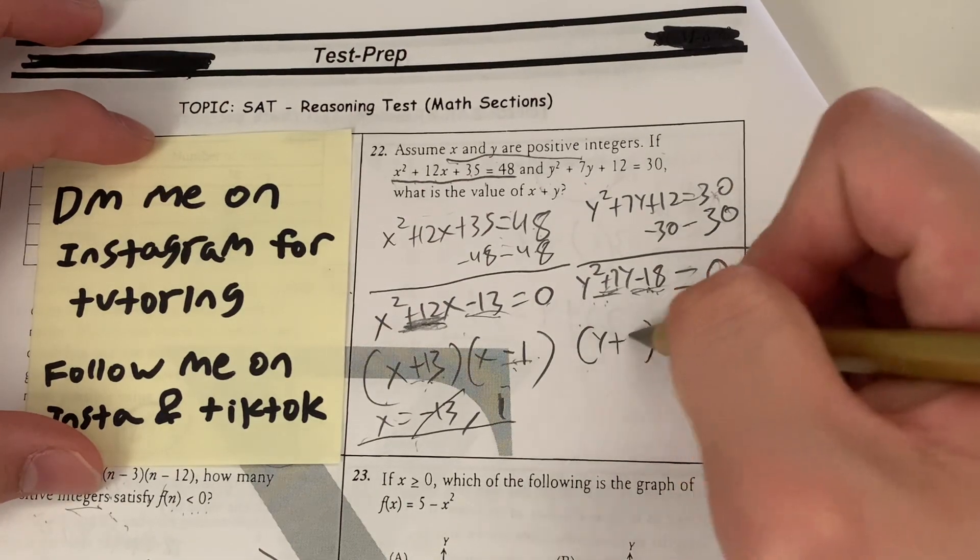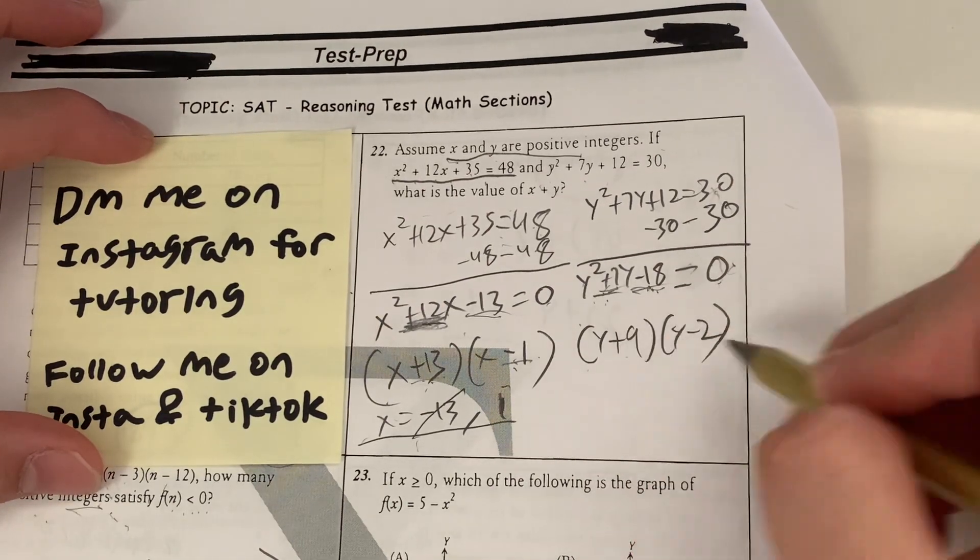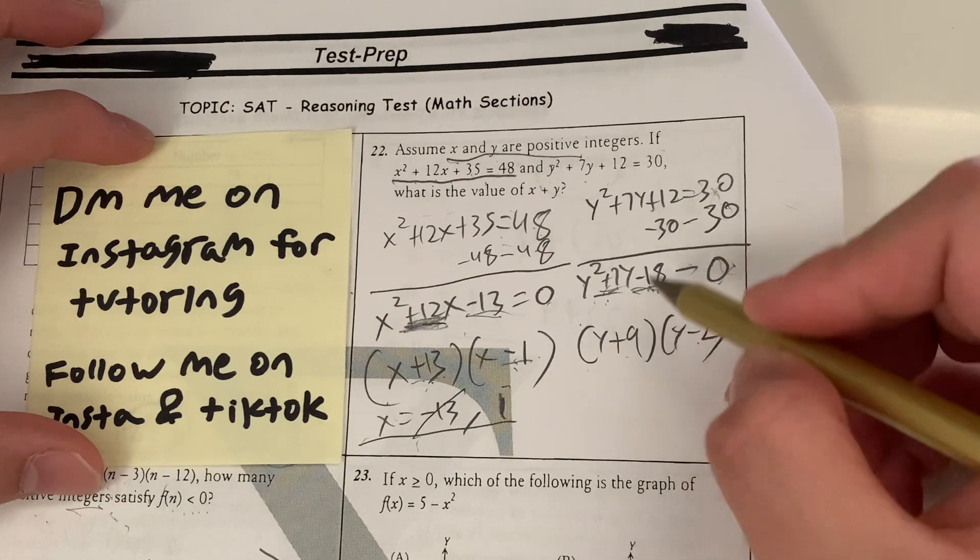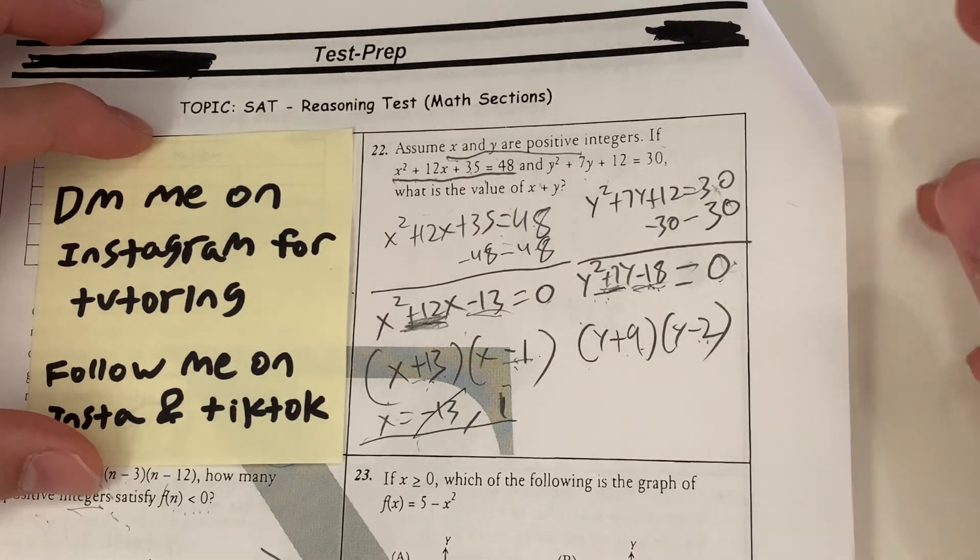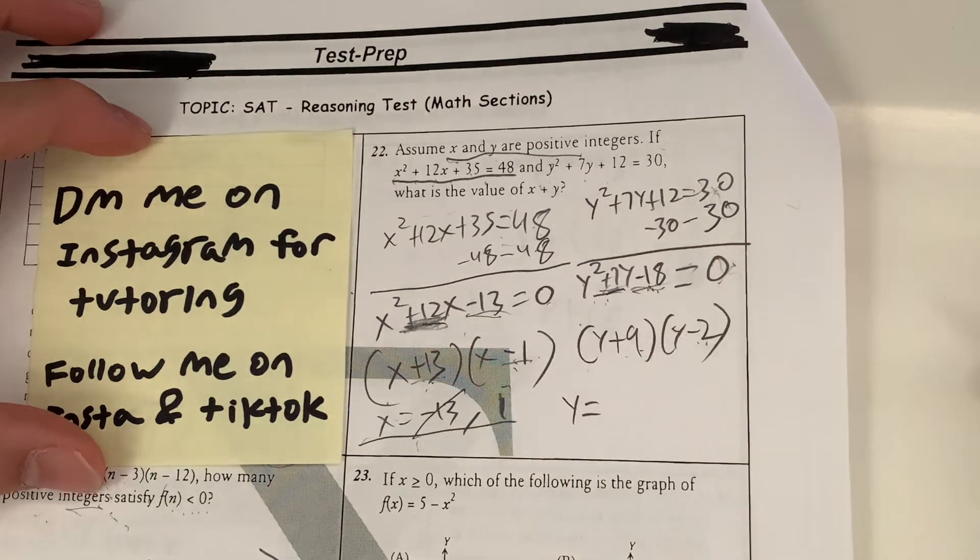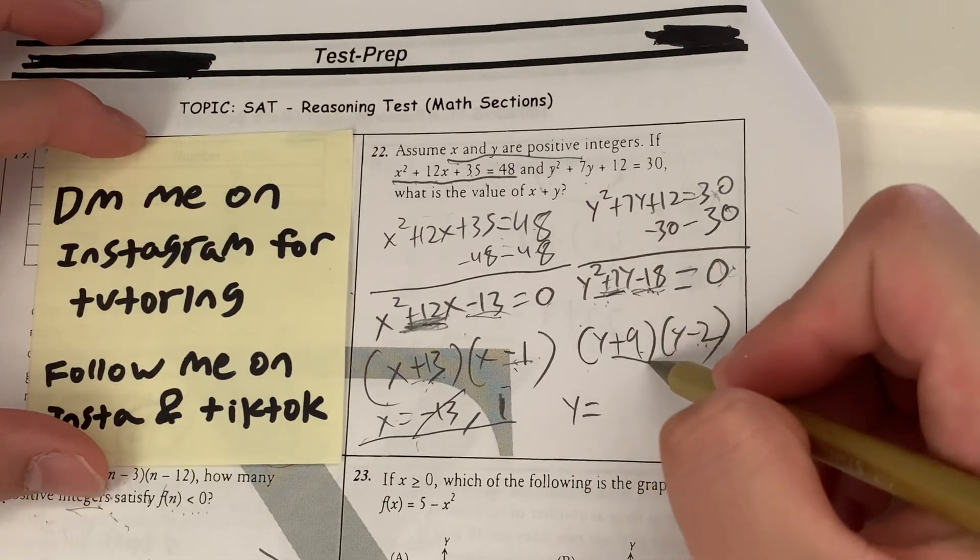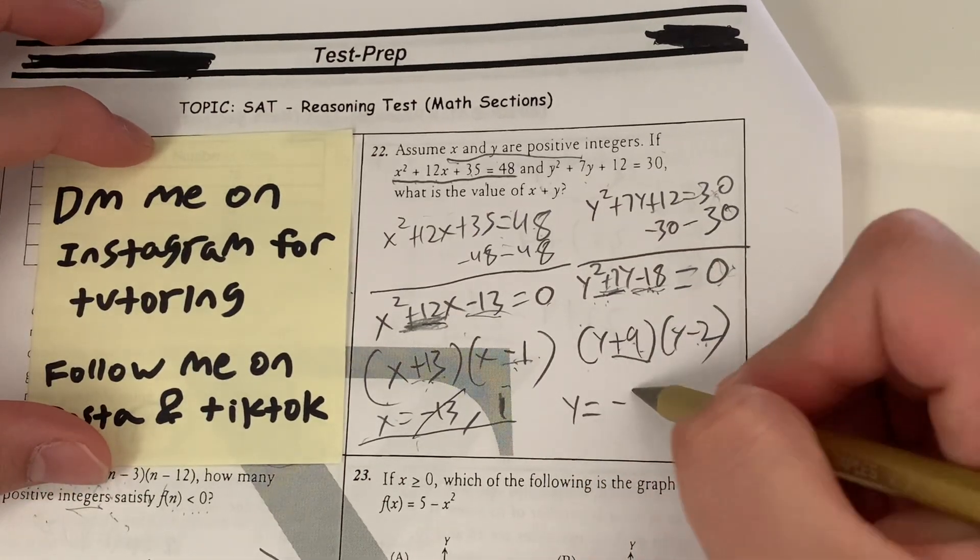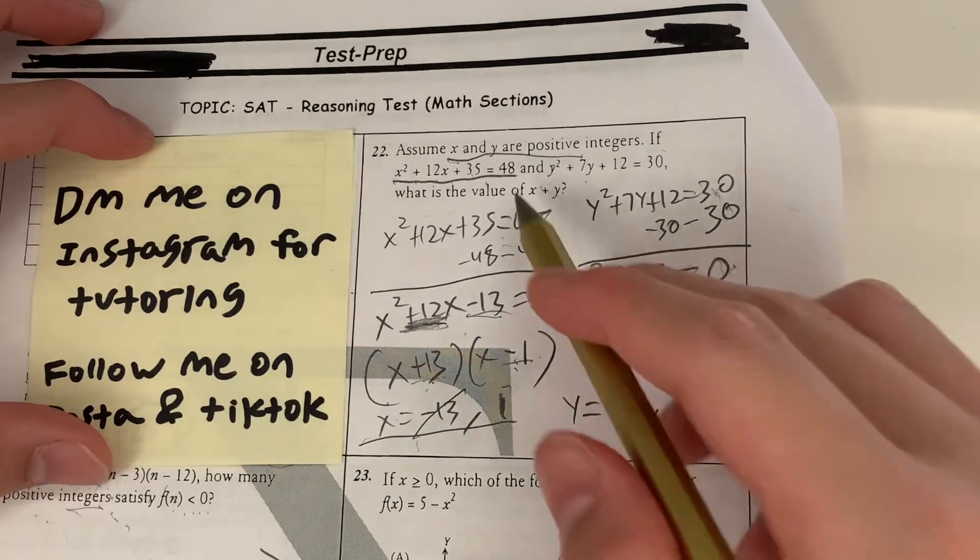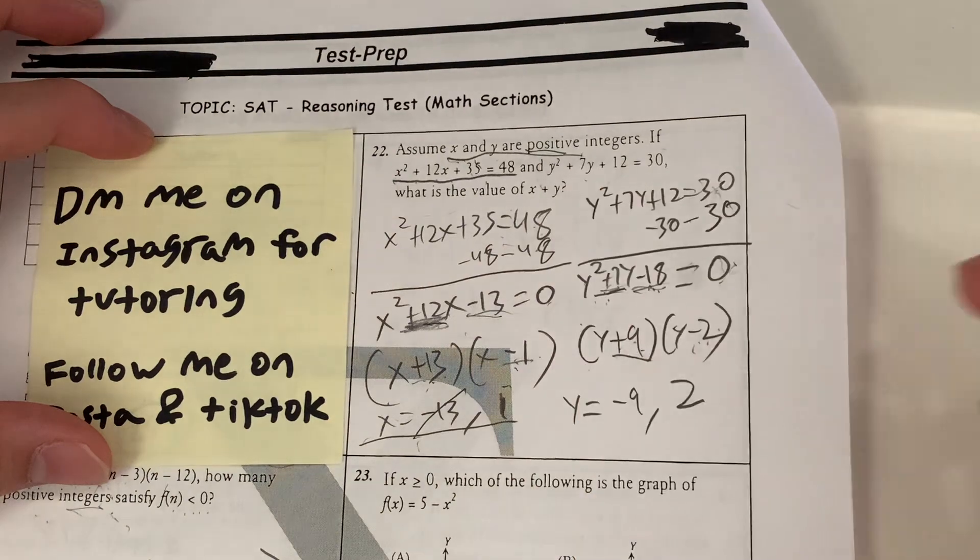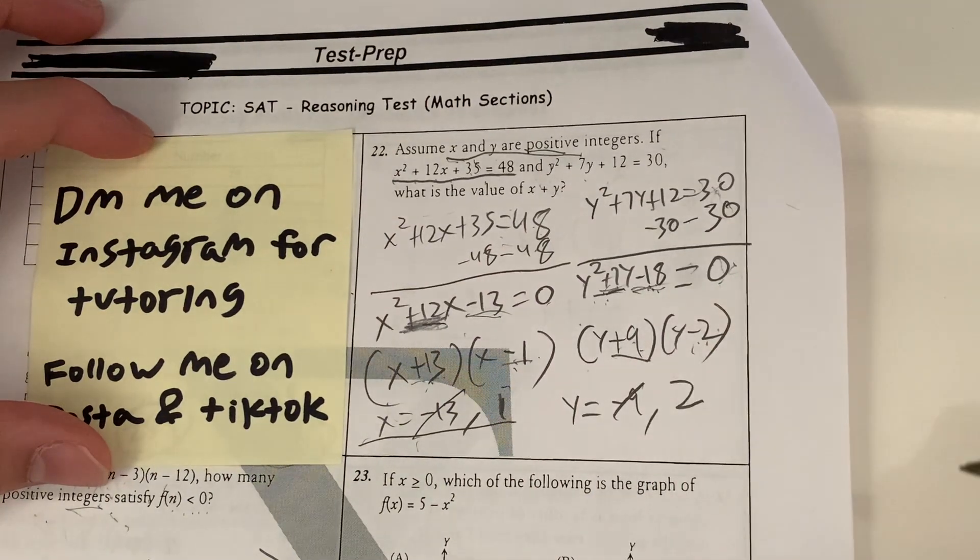So it means my numbers are going to be positive 9 and negative 2. 9 times negative 2 is negative 18. And 9 minus 2 is positive 7. So that aligns. So it means it's perfect. Now what are my values of y? They're going to be the opposite of what's right here. So opposite of plus 9 is negative 9. Opposite of negative 2 is positive 2. Now the question is asking for positive integer answers. So that rules out negative 9.